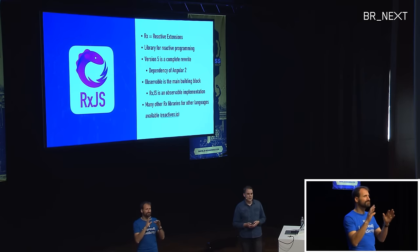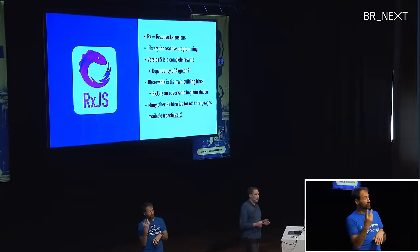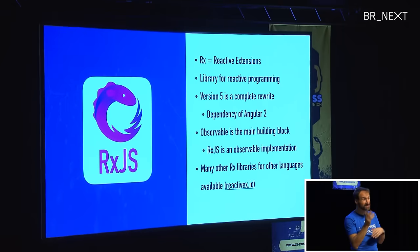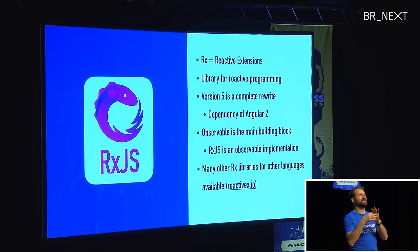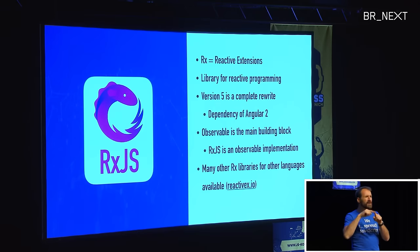RxJS stands for Reactive Extensions. It's a library for reactive programming, and version 5 is also a complete rewrite in TypeScript. The nice thing about RxJS 5 is that it's a direct dependency of Angular 2. The main building block of these Rx libraries — which are also available in many other languages — is the observable. There are Rx libraries for Swift, Java, .NET, and they all have pretty much the same implementation of this observable pattern.